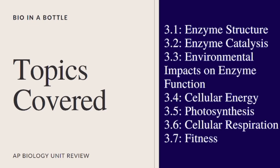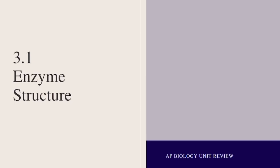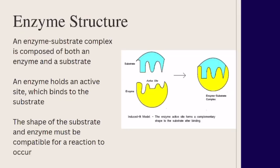Topic 3.1 is enzyme structure. What you have to know about enzyme structure is basically what an enzyme-substrate complex is. The substrate is what binds to the enzyme, as we see in this picture. They're able to bind to each other because of an induced fit.